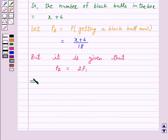now P2 which is X plus 6 upon 18 is equal to 2 into P1 which is X upon 12.